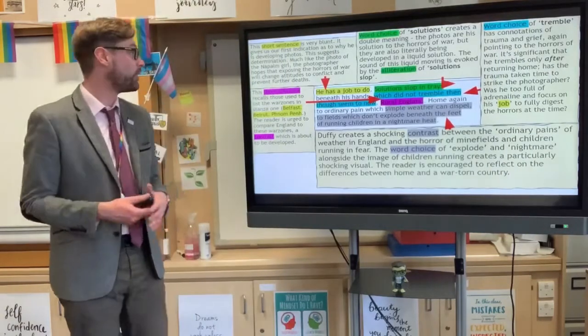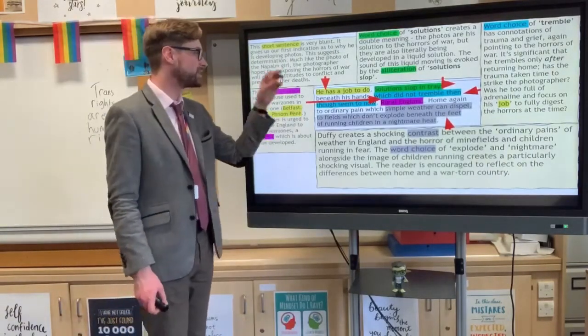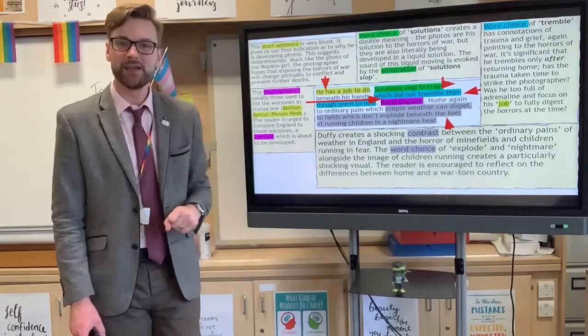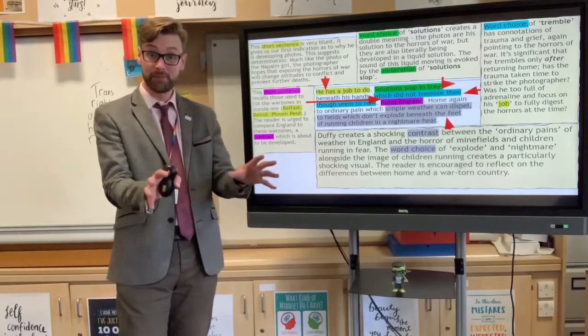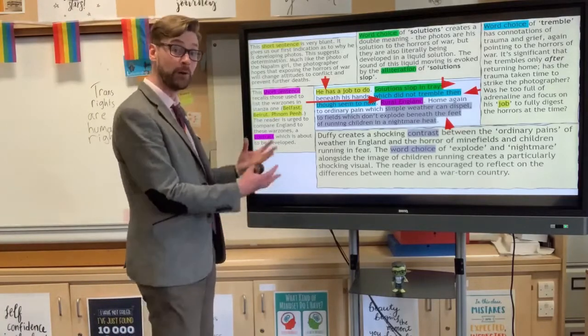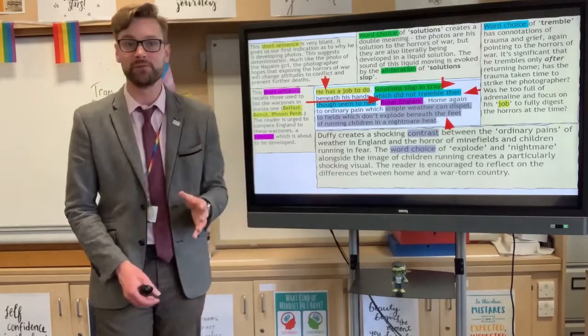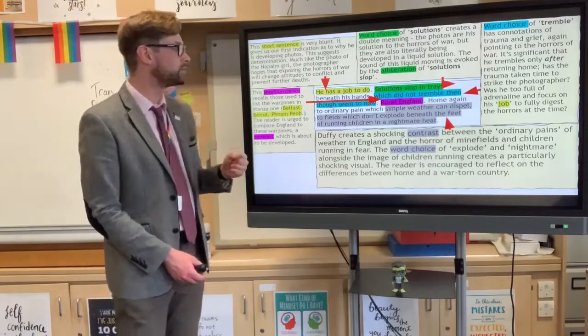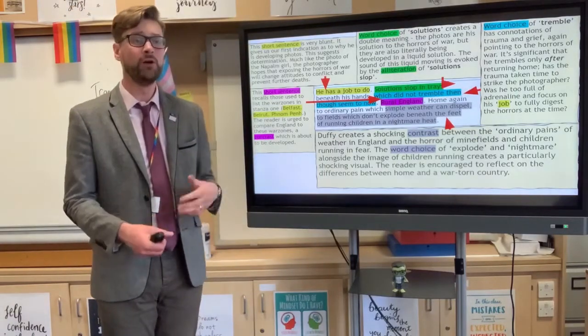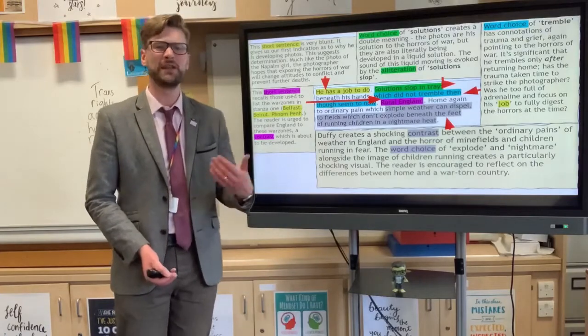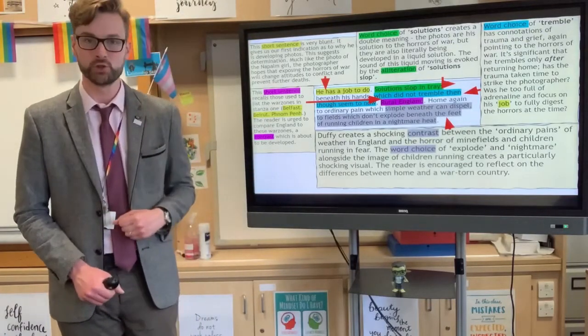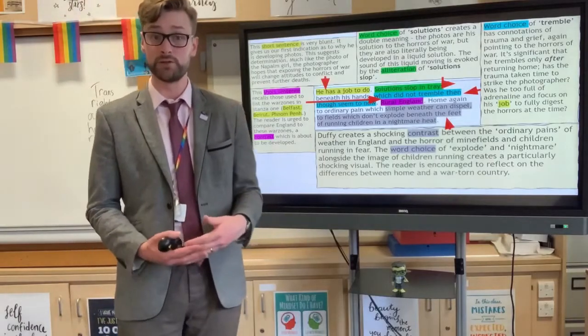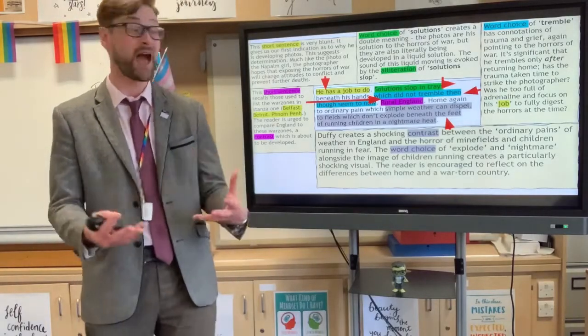So we kick the second stanza off with a very blunt, short sentence, he has a job to do. And if we got a sense from that previous stanza with the religious comparison to a priest that this is a man of purpose, well, it's very much confirmed here, folks. He has a job to do. He's determined. It's not, oh, he might get this done if he has enough time. It's no, I'm doing this now. He has a job to do. Very blunt, very important to understanding the war photographer as a character.